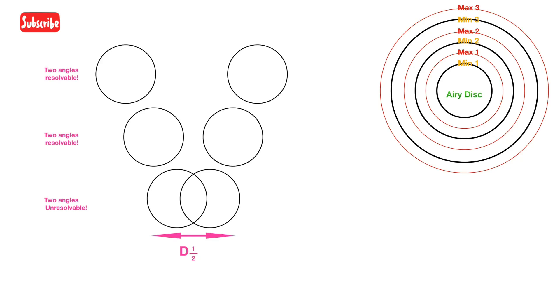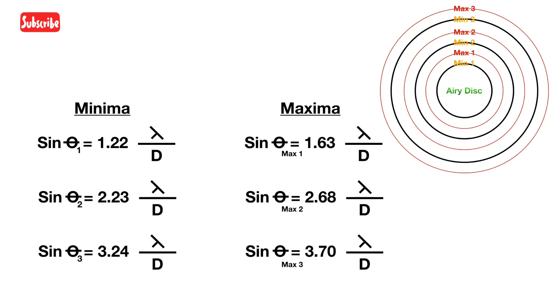This is just representing the Airy disk and showing the values for the minima and the maxima. If you want to know how the values are set, you will have to go and study more on Bessel function equation. I'm not going to go into any detail on that.